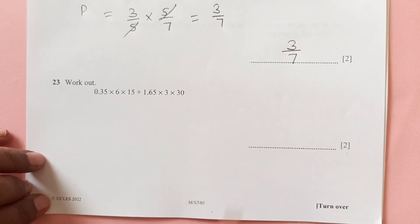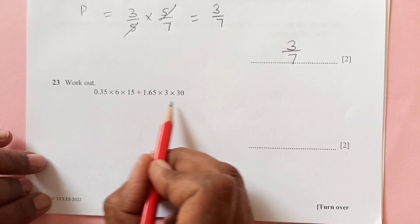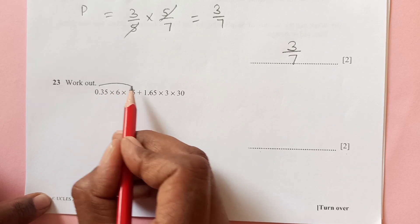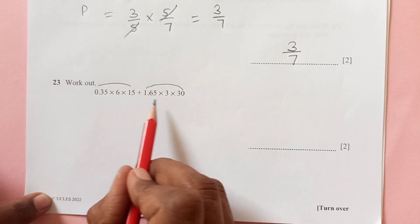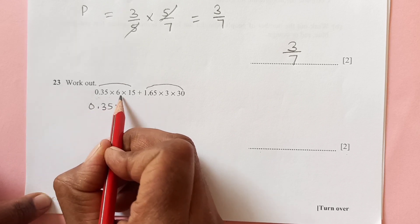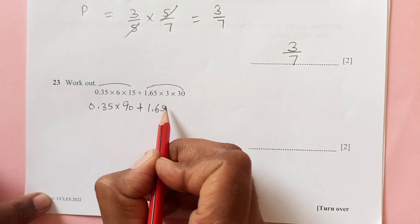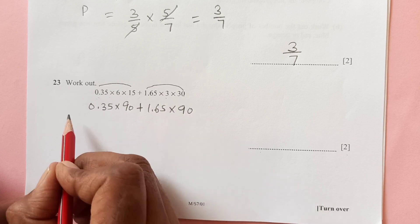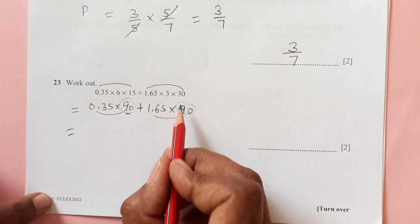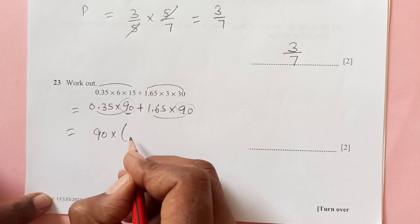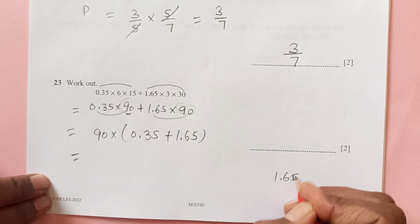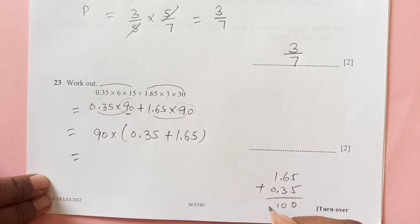Now number 23. Work out. Don't get confused with so many numbers. It is differentiated by plus sign. So this is first term and this is the second term. So now see if we can make something common here. Let's leave the decimal part as it is. 15 times 6 is 90 plus 1.65 times 30 times 3 is 90. So now you see we have this is first term, this is second. So 90 is common in both. So we can take out 90 and inside we will have 0.35 plus 1.65. So add this, 1.65 plus 0.35, this is 2.